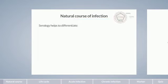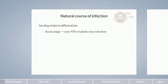Let's start with an overview of the phases. In adults, hepatitis B virus infection begins with an acute stage. More than 95% of affected adults will subsequently recover from infection, and less than 5% of cases progress to a chronic stage.